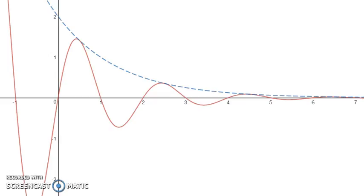It might actually help here to also graph negative 0.5 to the x, so you can see that it's actually oscillating between this function and its vertical reflection.